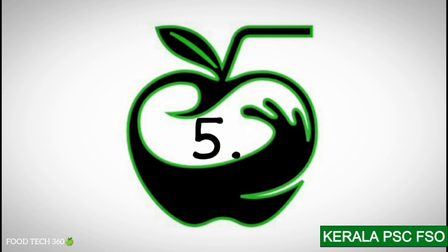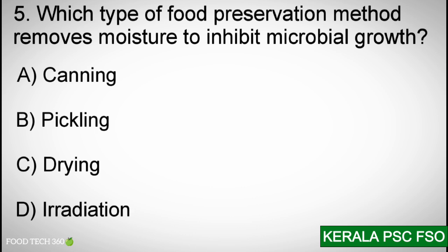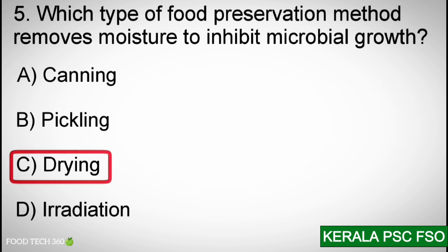Question number 5: Which type of food preservation method removes moisture to inhibit microbial growth? A. Canning, B. Pickling, C. Drying, D. Irradiation. Correct answer: C. Drying.